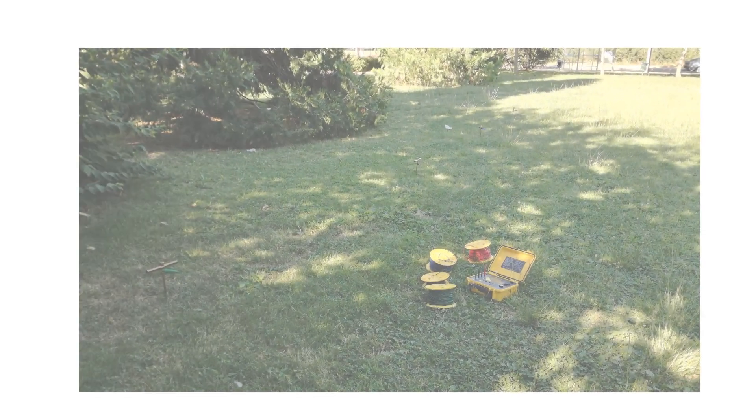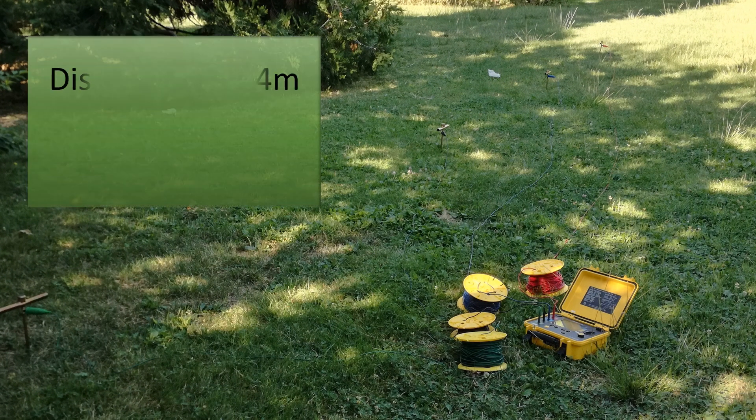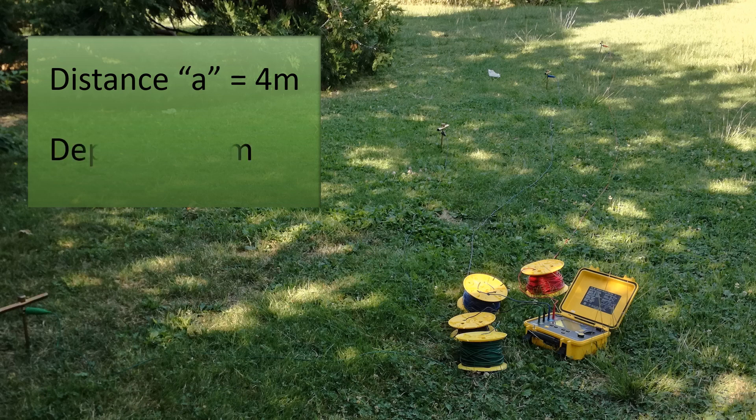Now, let's make an example of Wenner method. So, for our demonstration we will place the electrodes separated 4 meters and no more than 20 cm deep. In this case, we first determine the distance A, and from it, the depth of the electrode.